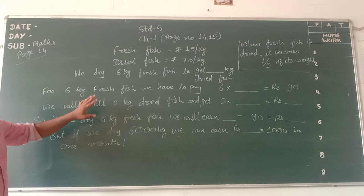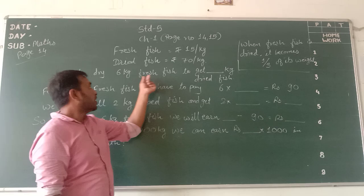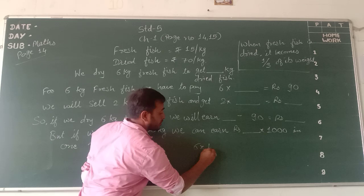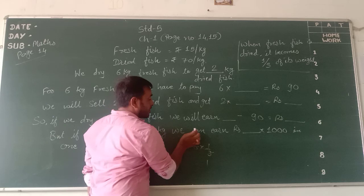Let's first calculate for the 6 kg. So we dry 6 kg fresh fish to get one third of its weight. So if it's 6 kg, one third of 6 kg becomes 2 kg dry fish.